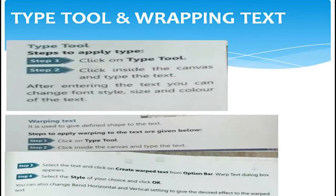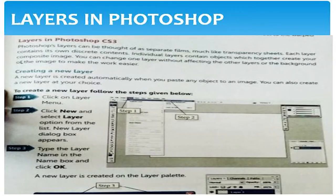Click on the type tool, click inside the canvas, and type the text. Select the text and click on 'Create warp text' on the option bar. The warp text dialog box appears — select the style of your choice and click OK.